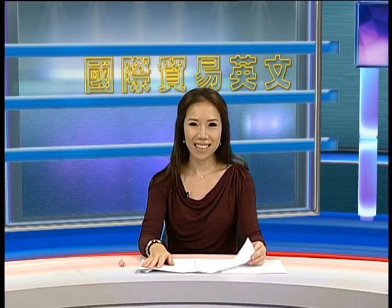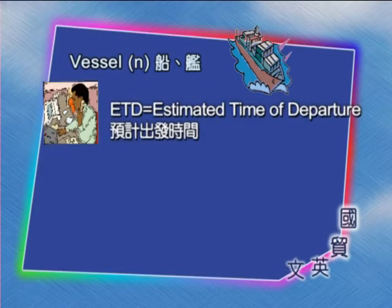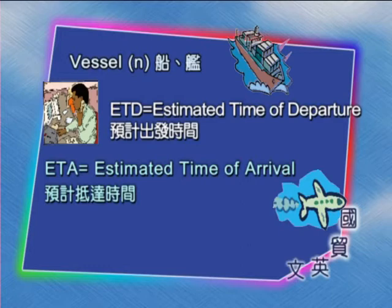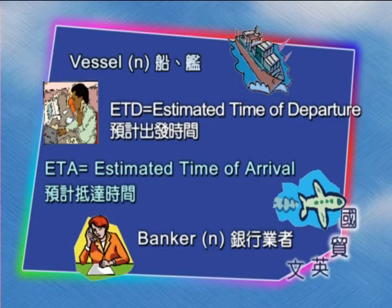我们来看一下这封信件里面的几个单字。Vessel——船；EDT也就是Estimated time of departure——预计出发时间；ETA就是Estimated time of arrival——预计抵达时间；Banker——银行业者。